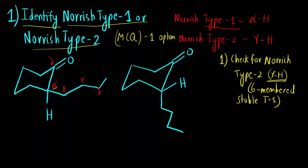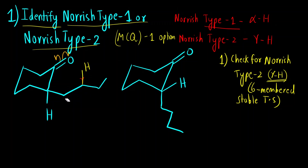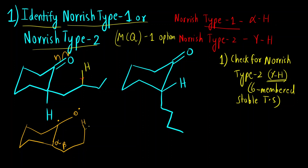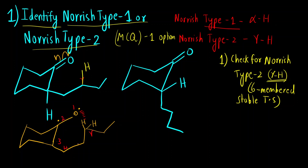Let us see how. This is alpha, beta and gamma. The gamma hydrogen is to be abstracted. This bond will break homolytically. We will get this oxygen radical. The oxygen interacts with this gamma hydrogen — counting 1, 2, 3, 4, 5 and 6 — that is why this is the six-membered transition state that is formed.